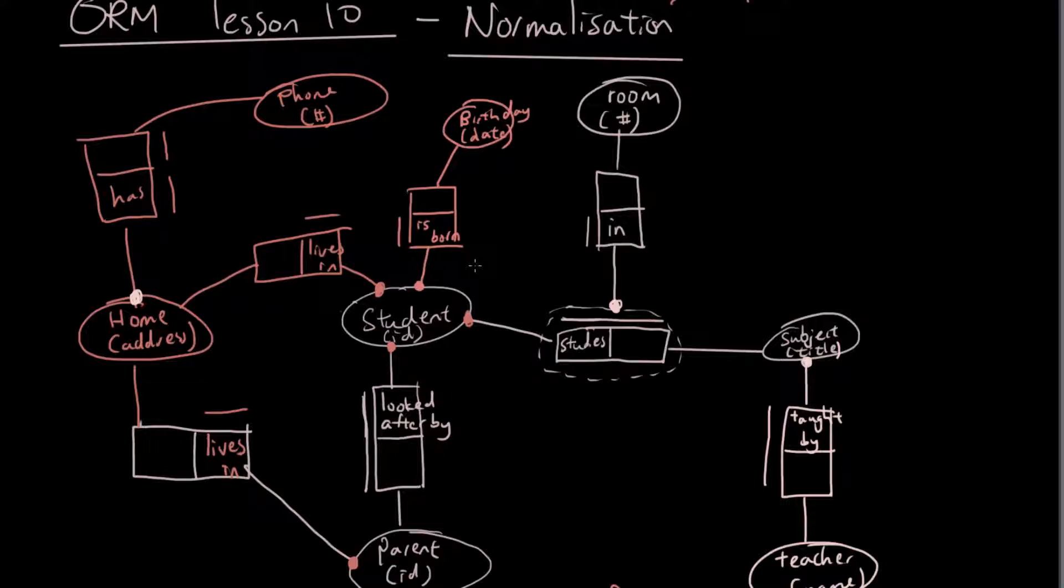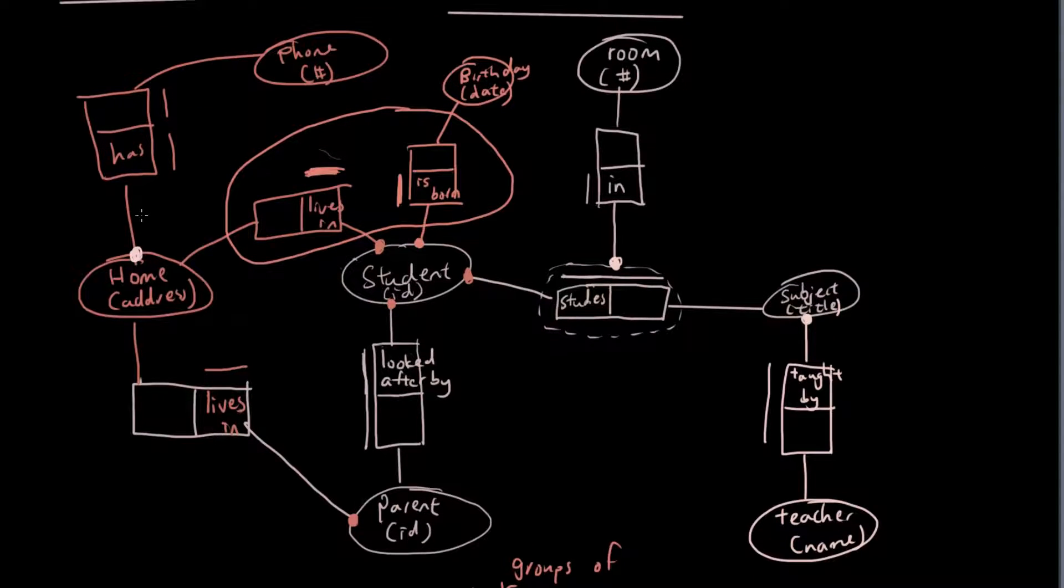When we circle the relationships we want to think about which entity is the key entity. The key entity meaning the entity that has the line above the row to indicate that it's unique. So if we have a look at these two relationships, they both have student as the key entity because the uniqueness constraint is on the student side. So we put both of these relationships inside the loop. And then we can also see that there is a one-to-one relationship here, so we circle that.